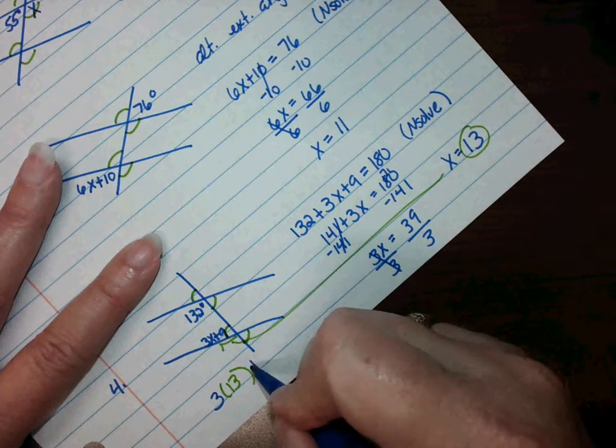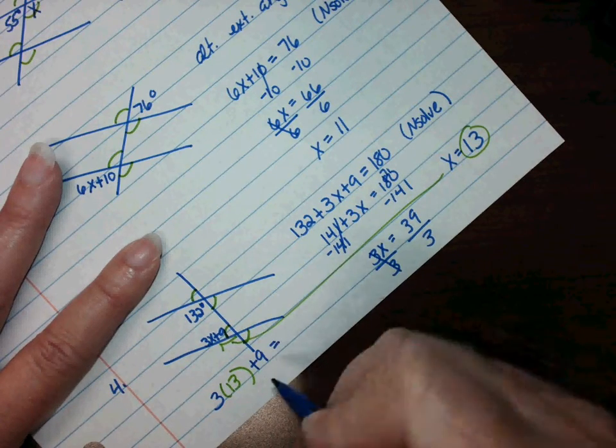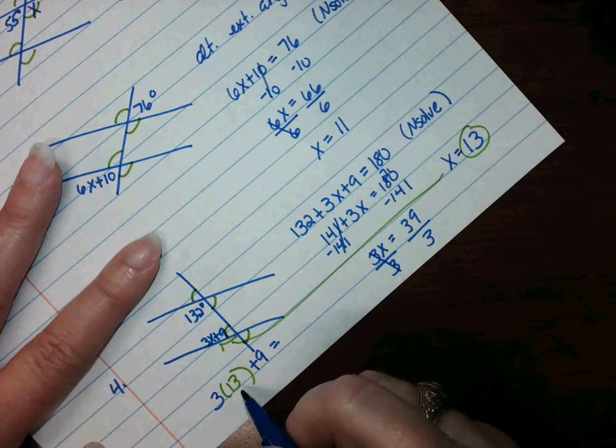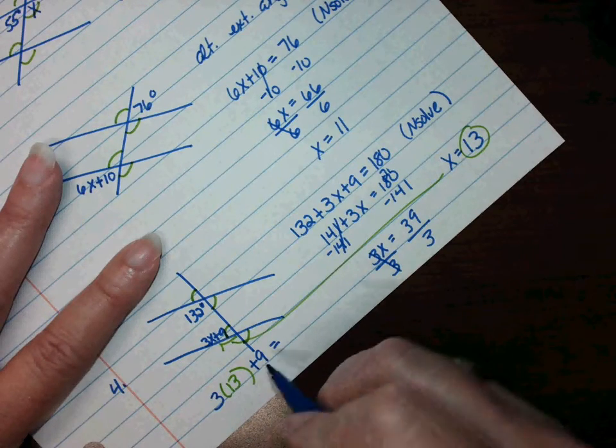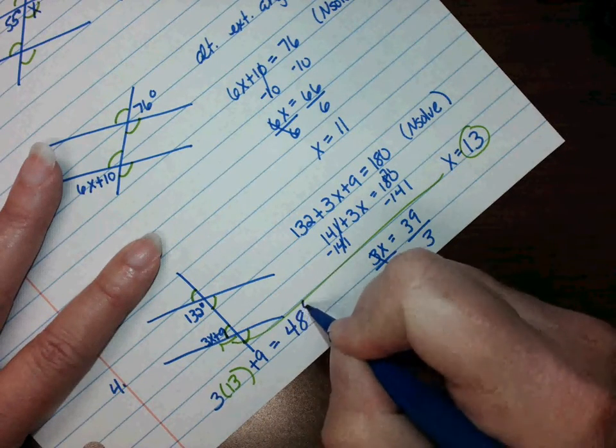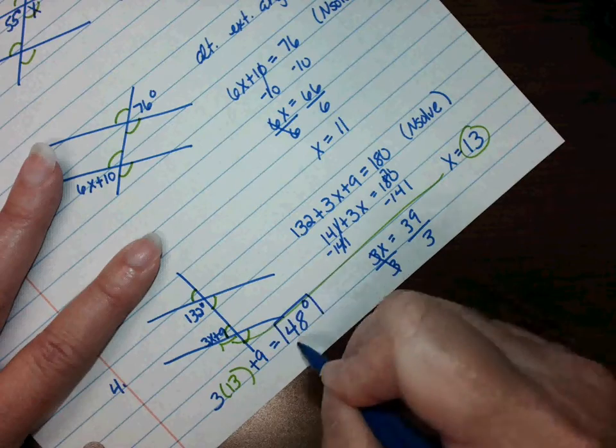So I'm going to do 3 times 13, because that's in place of the x, plus 9. And 3 times 13, see that's 39, plus 9 would be 48 degrees. This is the answer.